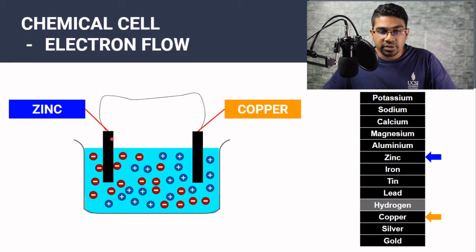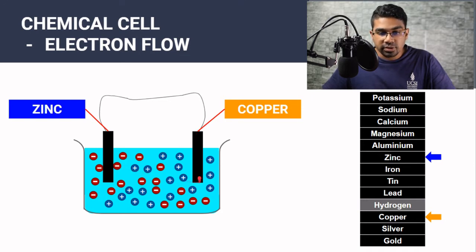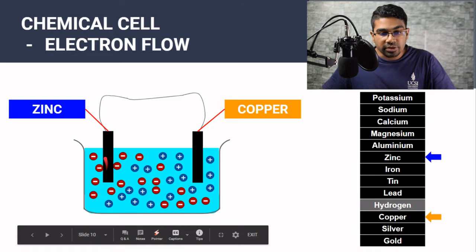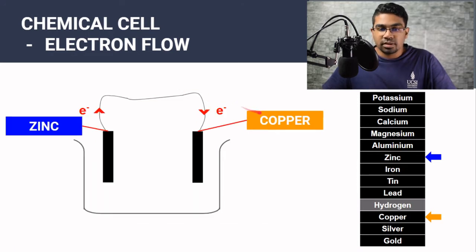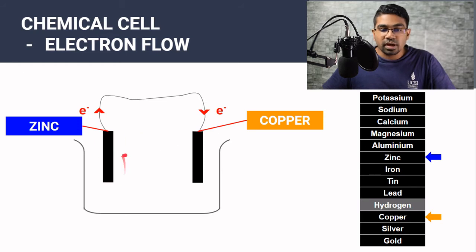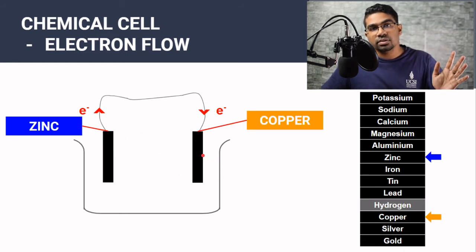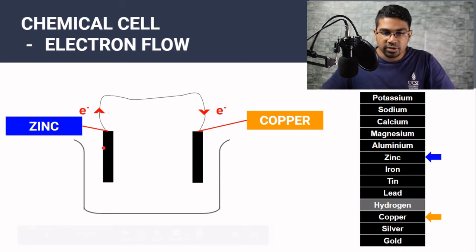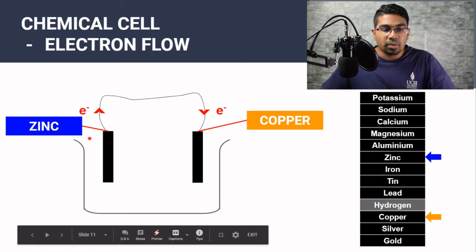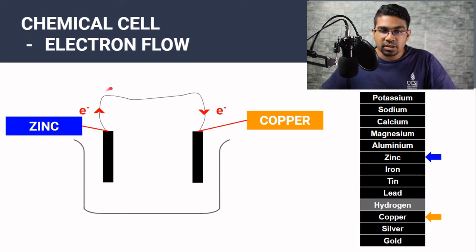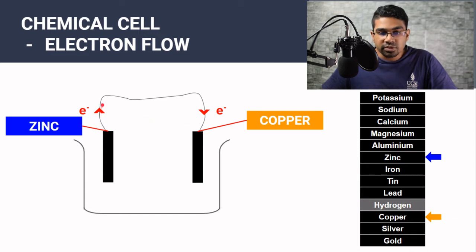This means zinc has a higher tendency to donate electrons, and zinc will preferentially donate electrons to copper. The flow of electrons is always through the external circuit — electrons do not flow from electrode to electrode through the electrolyte; they only flow through the external circuit. Initially both electrodes are electrically neutral, but as electrons flow from zinc to copper, there is a build-up of negative charge at the copper electrode, which would repel further electrons.